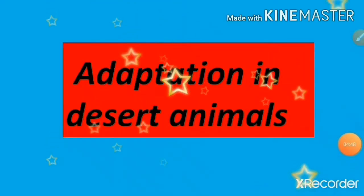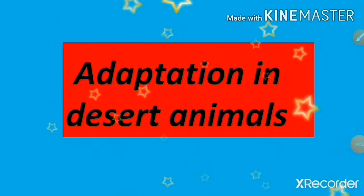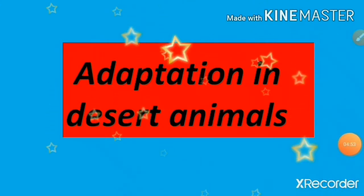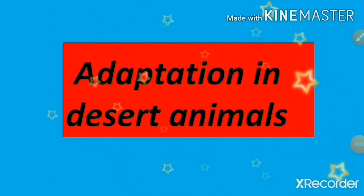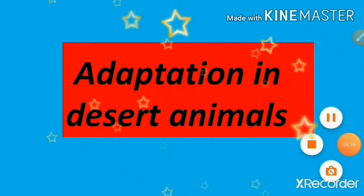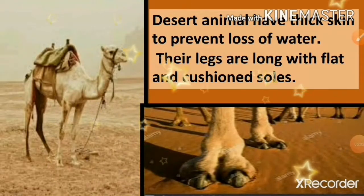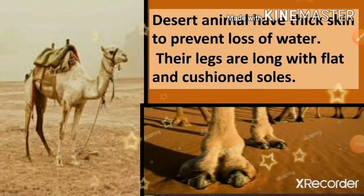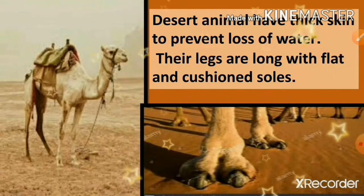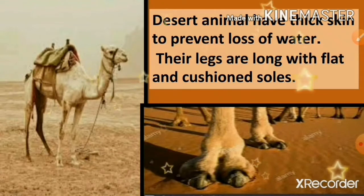Adaptation in Desert Animals: Desert animals have thick skin to prevent loss of water. Their legs are long with flat and cushioned feet.